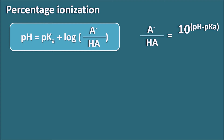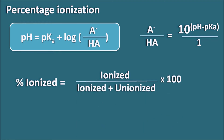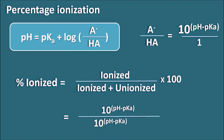We can denote the denominator simply as 1. So the ratio of ionized to unionized is 10^(pH − pKa) to 1. The percentage ionized equals the amount in ionized form divided by (ionized + unionized), multiplied by 100. Since the ionized proportion is 10^(pH − pKa) and the unionized is 1, we write: percentage ionized = [10^(pH − pKa) / (10^(pH − pKa) + 1)] × 100. This gives the percentage ionization of a weakly acidic drug.